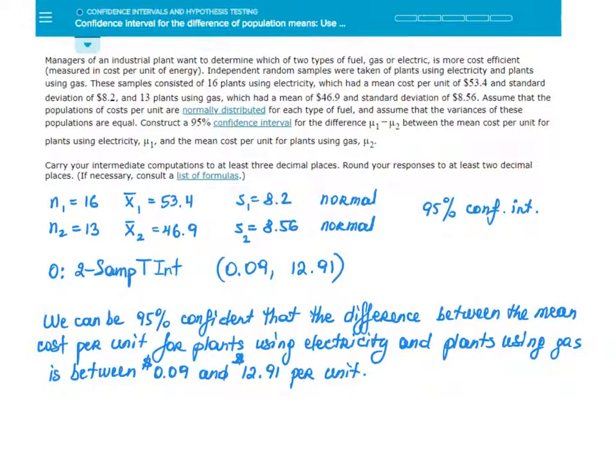In this lesson we will learn how to construct intervals for the difference of population means using the T distribution. Managers of an industrial plant want to determine which of two types of fuel, gas or electric, is more efficient, measured in cost per unit of energy.